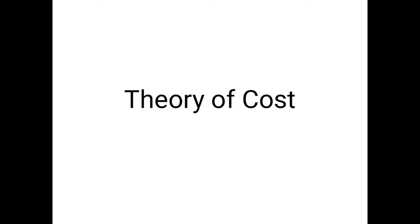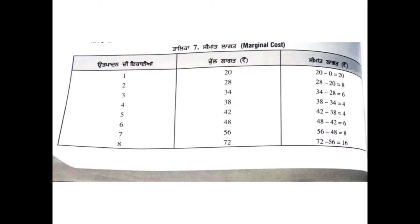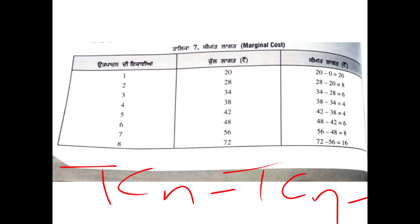Marginal cost is calculated as total cost in the nth period minus total cost in the n minus 1 period — that is, current total cost minus previous total cost. For example, 28 minus 20, or 34 minus 28, giving us values like 16.